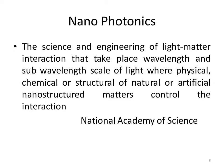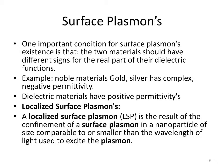Nanophotonics is the science and engineering of light-metal interaction that takes place at sub-wavelength scales using physical, chemical, or artificial stimulation structures to control the interaction. One important condition for surface plasmons to exist is that the two materials should have different signs for the real part of the dielectric permittivity. For example, noble metal materials such as gold and silver have complex negative permittivity, while dielectric materials have positive permittivity. These noble metals and dielectric materials are used for the design and excitation of surface plasmons.